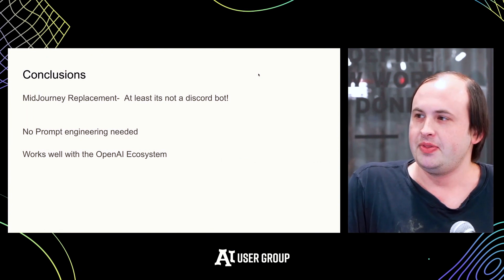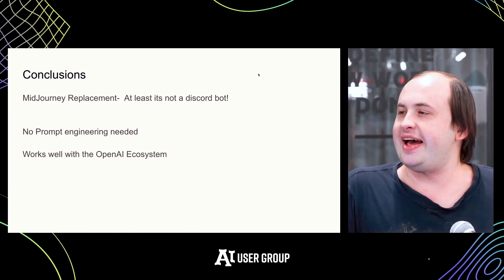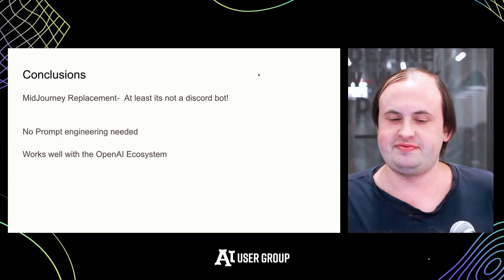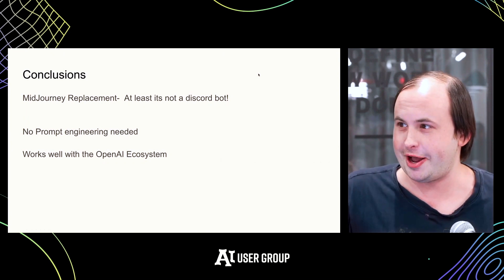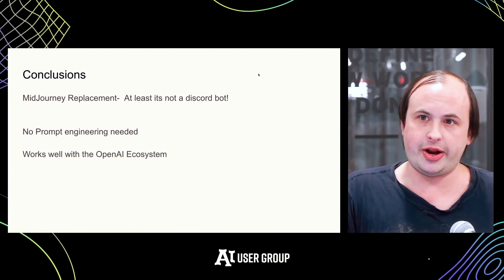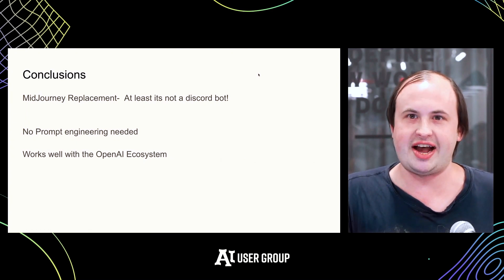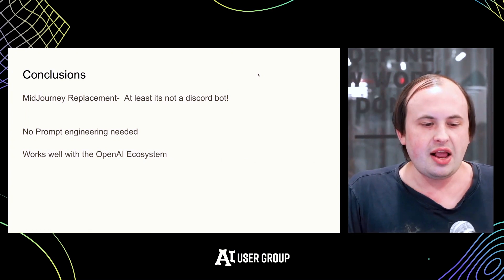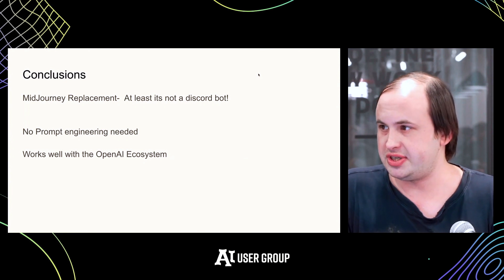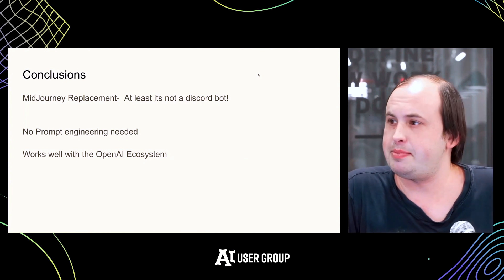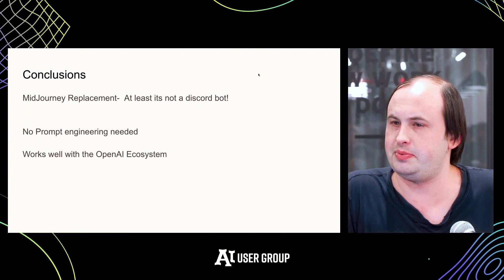In conclusion, I think you'd use DALL-E 3 over MidJourney because even though you don't have all those fine controls, at least it's not just a Discord bot. It really helps with prompt engineering so you don't have to spend hours figuring out what magic keywords do, and it works well within the OpenAI ecosystem. Those are my high-level thoughts after using it for a couple of weeks. Does anyone have questions or opinions about their own experience with DALL-E 3?